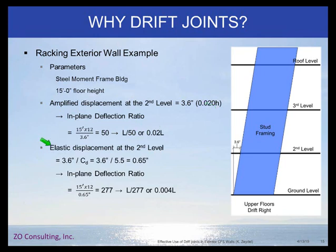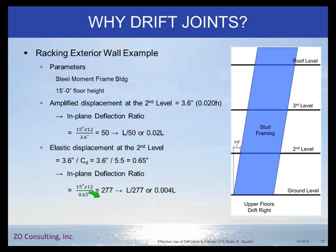So our in-plane deflection ratio would be L over 50, or 0.02L, which matches the 0.02H. The elastic displacement at the second level — if we take the 3.6 inches and divide out the Cd factor of 5.5 for a steel moment frame — our elastic deflection would be 0.65 inches. So our in-plane deflection ratio would be L over 277, or 0.004L. For reference, plaster walls are generally limited to L over 360 for out-of-plane, and even the elastic displacement of L over 277 is quite a bit less than that limit.